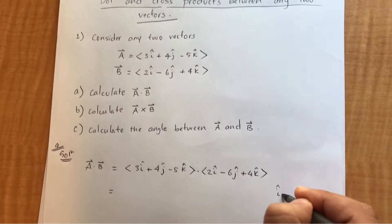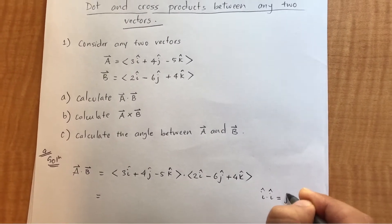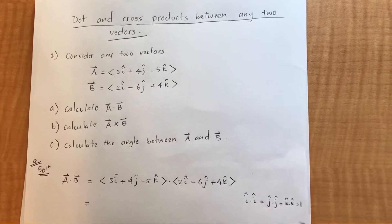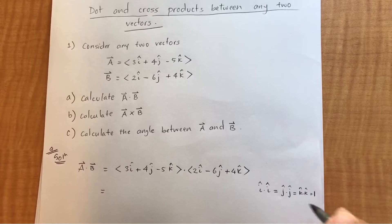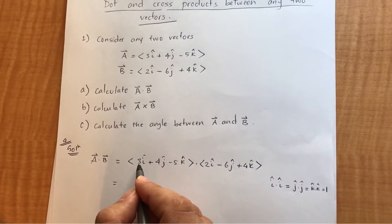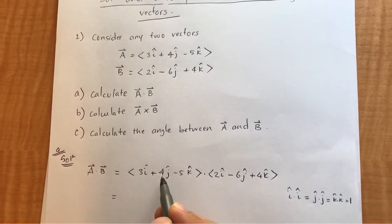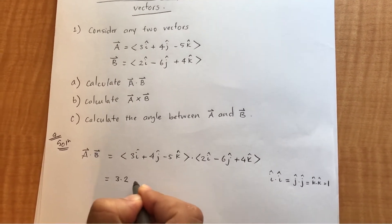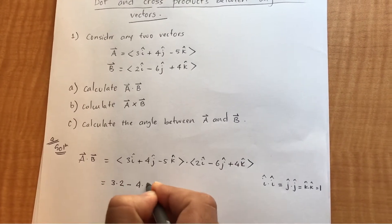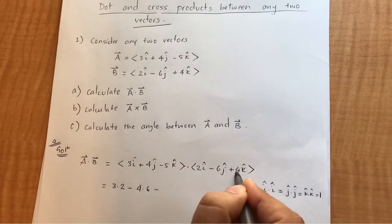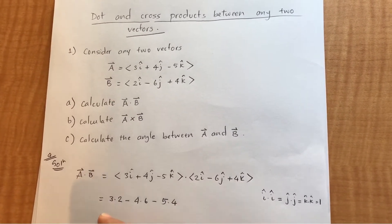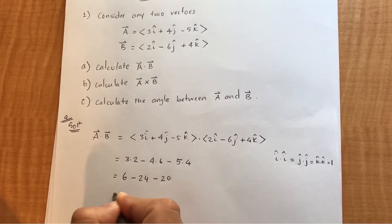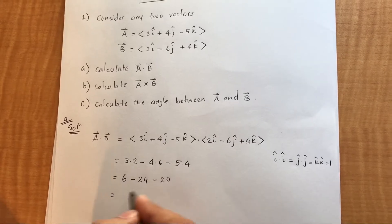When you dot i with i, j with j, and k with k, you simply get 1, whereas anything apart from that reduces to 0. So we only multiply the coefficients of matching unit vectors: i with i, j with j, and k with k. This gives us 3×2 minus 4×6 minus 5×4.